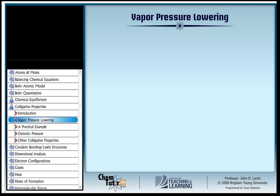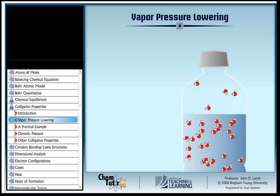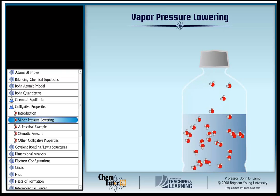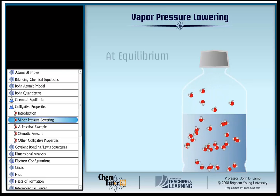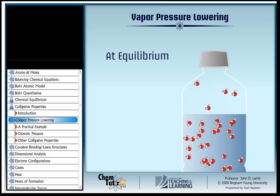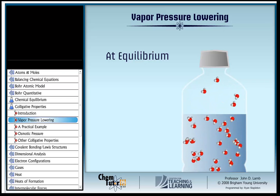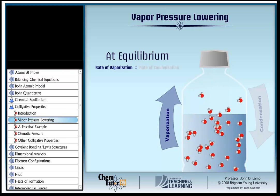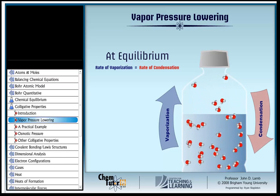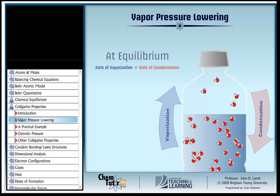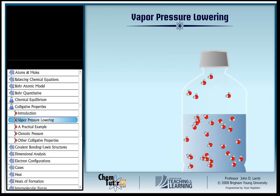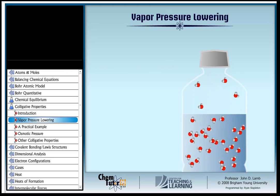The first colligative property we'll look at is called vapor pressure lowering. Any liquid has a so-called equilibrium vapor pressure — that's the pressure exerted by molecules of the liquid which have vaporized above the liquid in a closed container at equilibrium. That 'at equilibrium' wording is really important: it means the liquid has been in the closed container long enough that the rate of vaporization equals the rate of condensation. When you dissolve a solute in a liquid, it causes the vapor pressure to go down, and the amount by which it decreases is predicted by a simple law called Raoult's law.